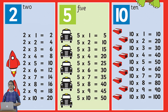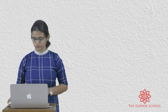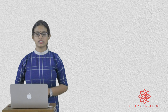Now the table of 10. 10×1=10, 10×2=20, 10×3=30, 10×4=40, 10×5=50, 10×6=60, 10×7=70, 10×8=80, 10×9=90, 10×10=100.